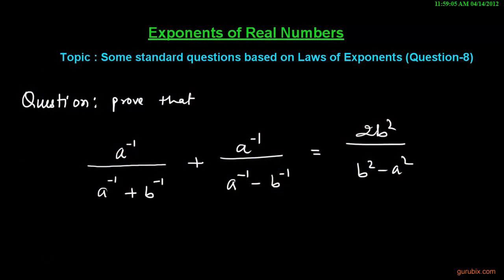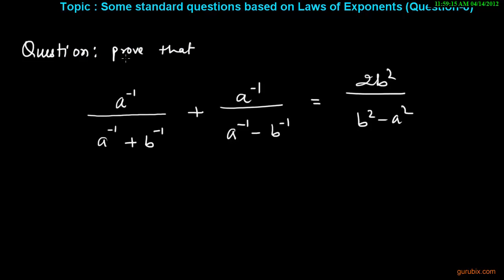Welcome friends. In this video we shall solve another important question which is based on laws of exponents. The question is: prove that a inverse over a inverse plus b inverse, plus a inverse over a inverse minus b inverse, is equals to 2b square over b square minus a square. Let us see how to prove it.